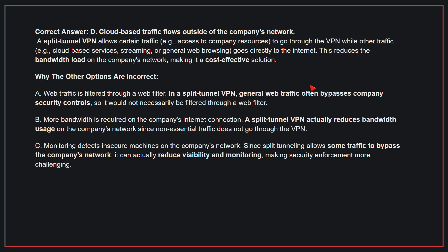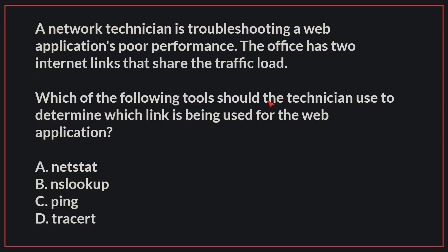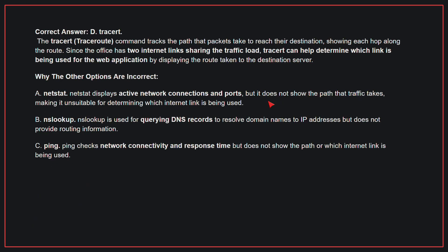A network technician is troubleshooting a web application's poor performance. The office has two internet links that share the traffic load. Which of the following tools should the technician use to determine which link is used for the web application? The correct answer is D, TraceRT. The TraceRT command tracks the path that packets take to reach their destination, showing each hop along the route. Since the office has two internet links sharing the traffic load, TraceRT can help determine which link is being used by displaying the route taken to the destination server.